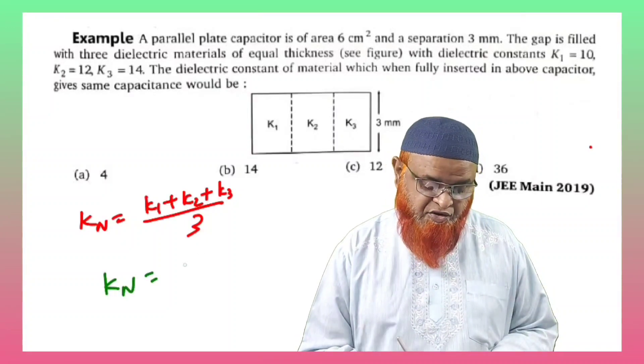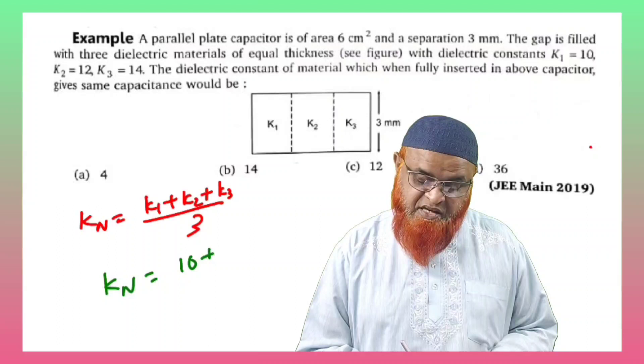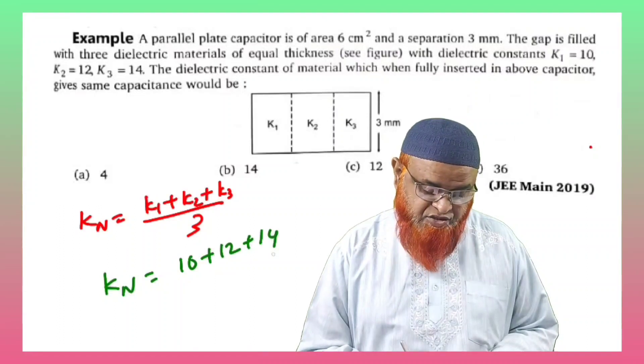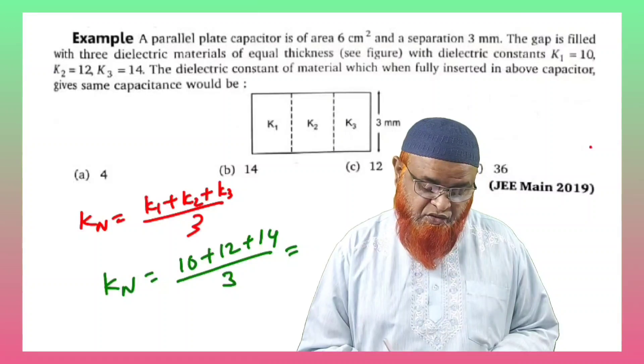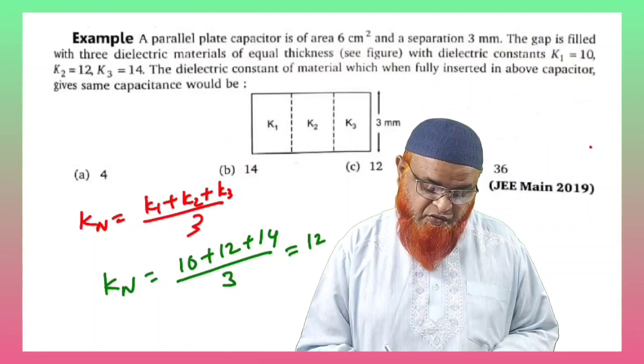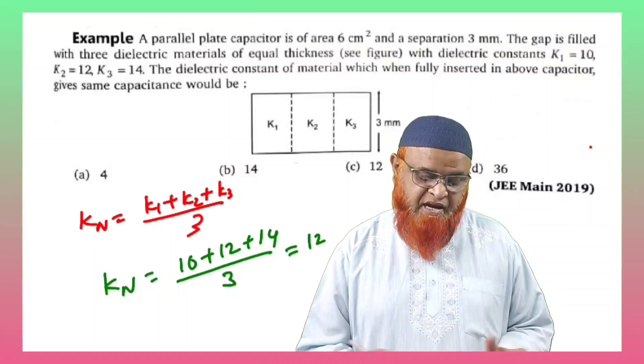k_net is going to be k1 plus k2 plus k3, which is 10 plus 12 plus 14 divided by 3. Therefore, you're finally getting 12 as your answer. So k_net is going to be 12.